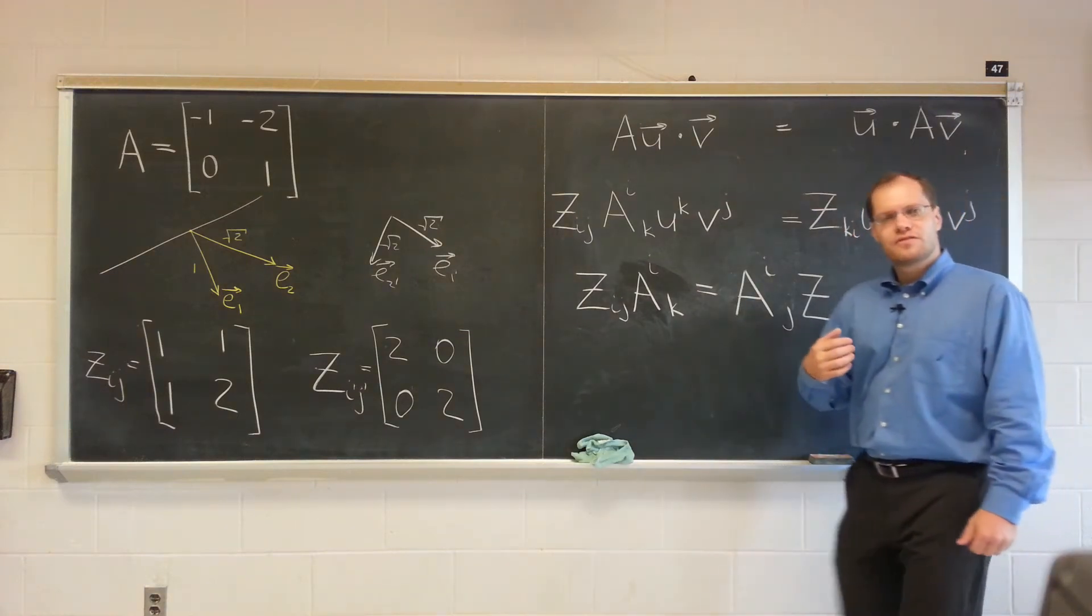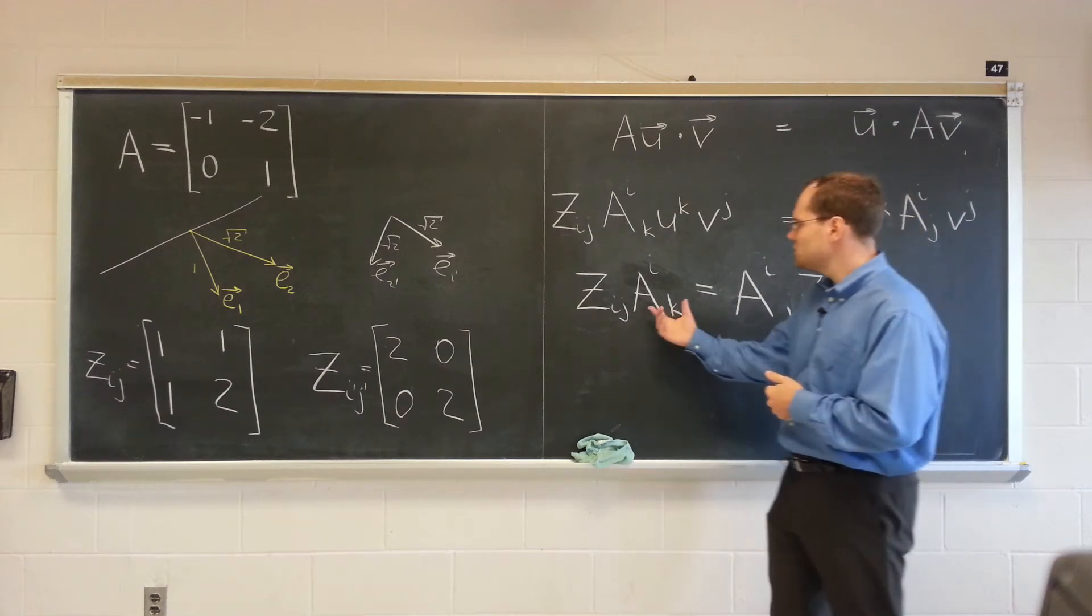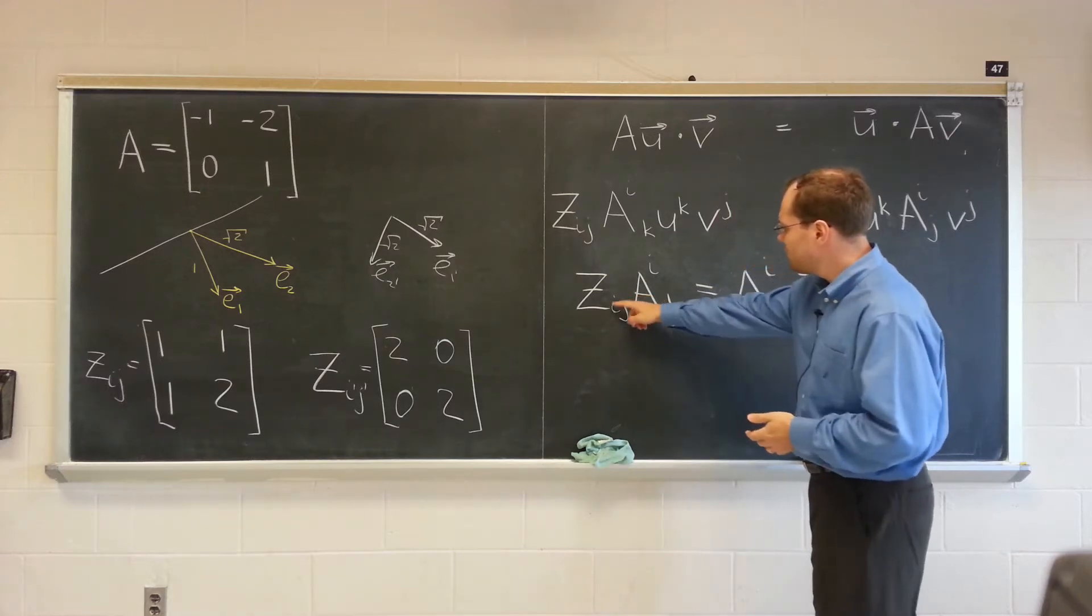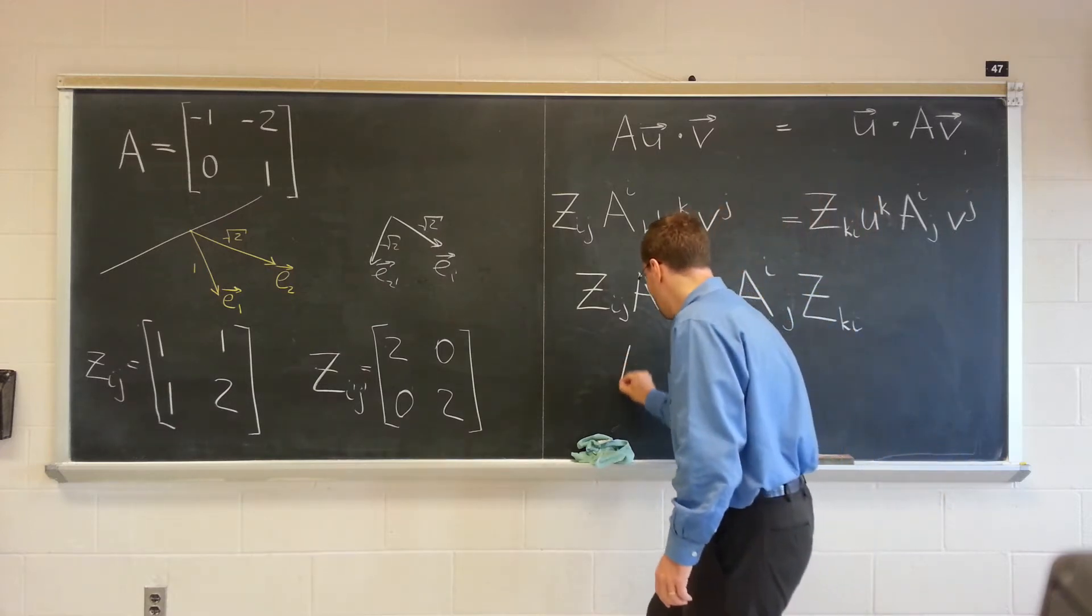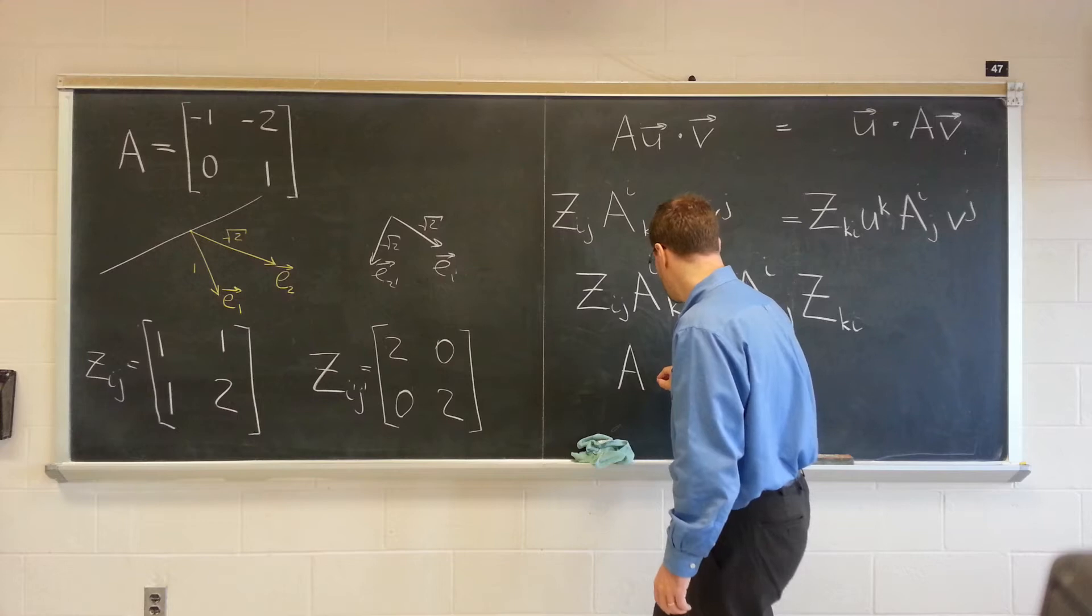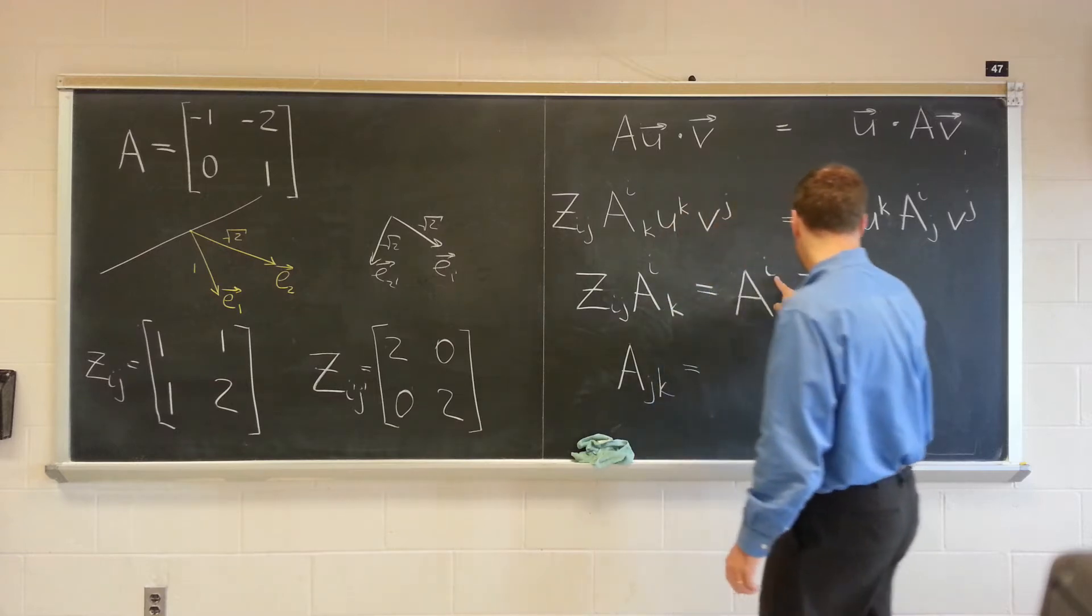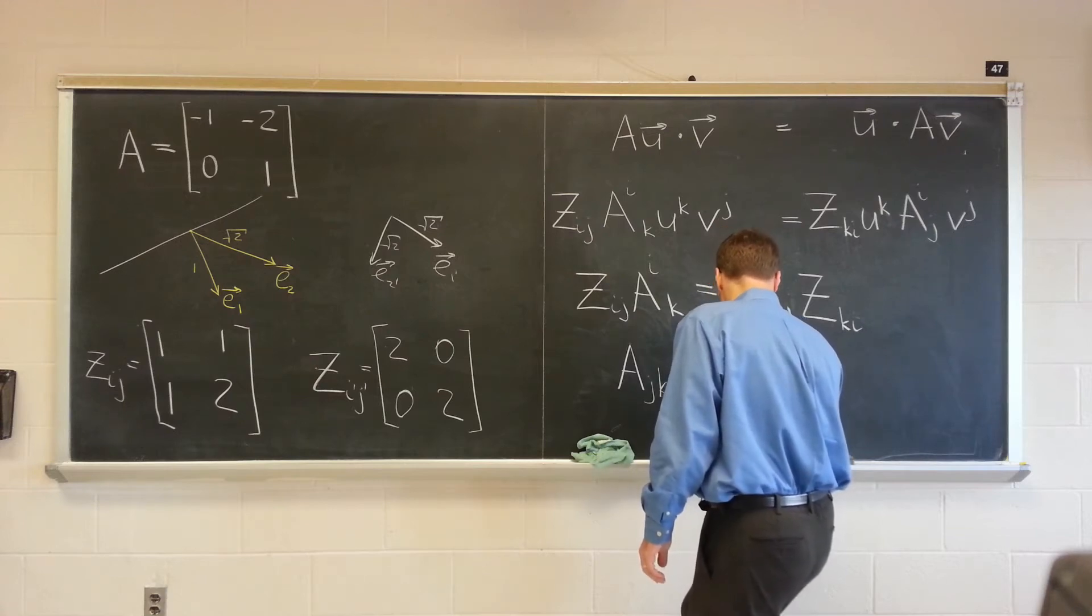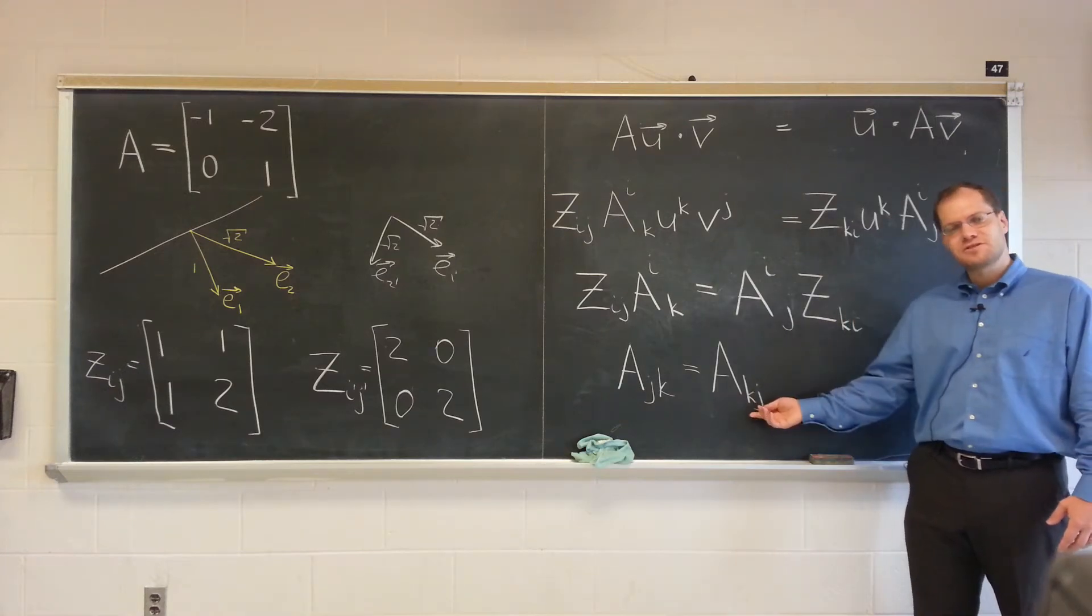And now let's interpret it from the tensor calculus point of view. You know, you see what it's going to say. Let's look at first, let's just see that symmetric thing. So if I use the index juggling formalism and just use this to lower the index, this would be A_jk, and this would be A_kj. Hey! Symmetry!